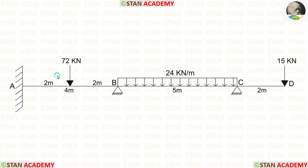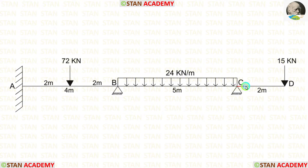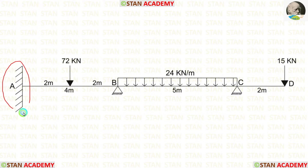In span AB, there is a point load of 72 kN acting at the center. In span BC, there is a uniformly distributed load of 24 kN per meter acting for the full span. In the overhanging span CD, there is a point load of 15 kN acting at point D. At point A, there is a fixed support. At points B and C, there are hinged supports.